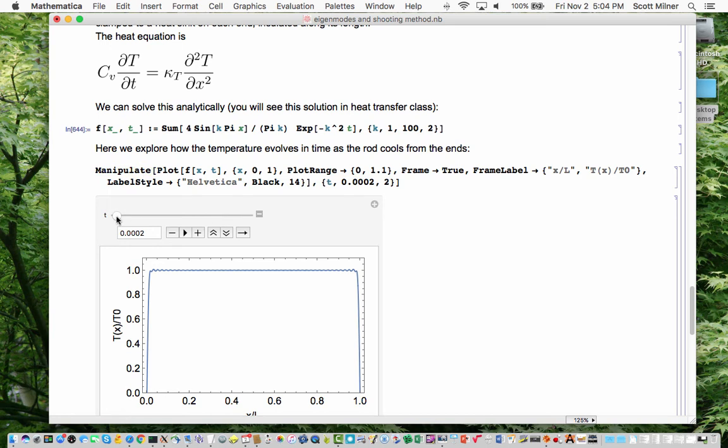And what I'm manipulating is a plot of this exact solution written as a sum which is beyond what I want to tell you about right now. So the manipulate panel manipulates the time in the plot from basically zero up to two. And so if I slide the slider you can see how this rod indeed does cool quite quickly at the ends. The temperature drops rapidly there or slowly in the middle.